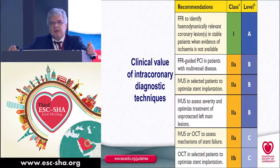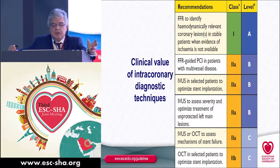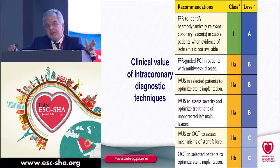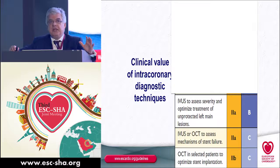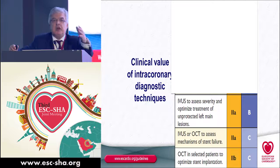The other important aspect is the use of intracoronary imaging. IVUS is now considered a Class 2A indication to assess severity and optimize treatment of unprotected left main. OCT is also included as a Class 2A indication to assess the mechanisms of stent failure — meaning it should be used when there is evidence or suspicion of stent failure, as we just saw in the previous examples. It is considered Class 2B, meaning it may be used in selected patients to optimize stent implantation. The level of evidence is C, meaning it results from consensus among experts, with not a lot of data to support these recommendations.